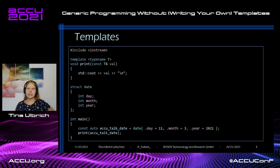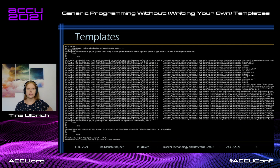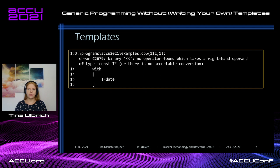Now I define my own type, which is a date, and I create a date and call the print function with it. I get a compile error, and in MSVC it looks like a wall of text that doesn't even fit on the slide. At the very top it says that the streaming operator is not overloaded for my date type, which is true. If you're not used to template errors like this, they can be very overwhelming and hard to read.